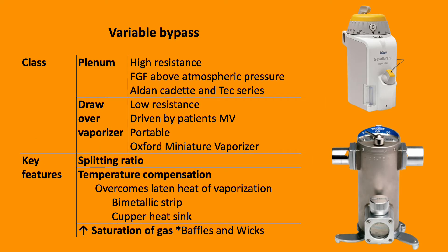Variable bypass — plenum vaporizers — are high resistance. Fresh gas flow is above atmospheric pressure, as shown in the top right corner with a sevoflurane vaporizer. Examples include the Tec series.